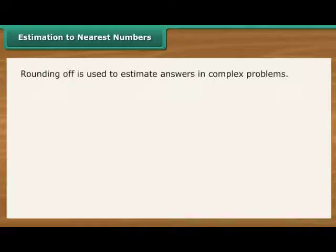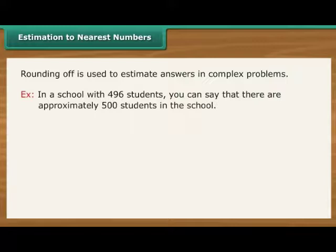Estimation to nearest numbers. As we come across large numbers, performing calculations on them becomes complex. To avoid the complexity, estimation or rounding off is used. For example, in a school with 496 students, you can say that there are approximately 500 students in the school.